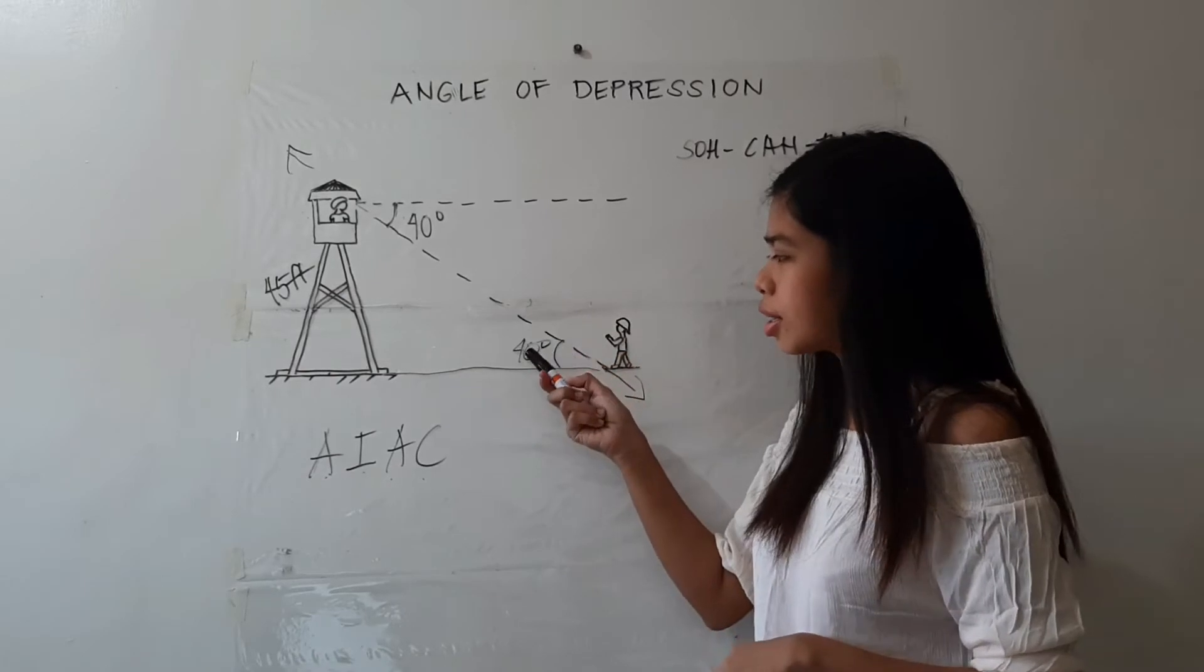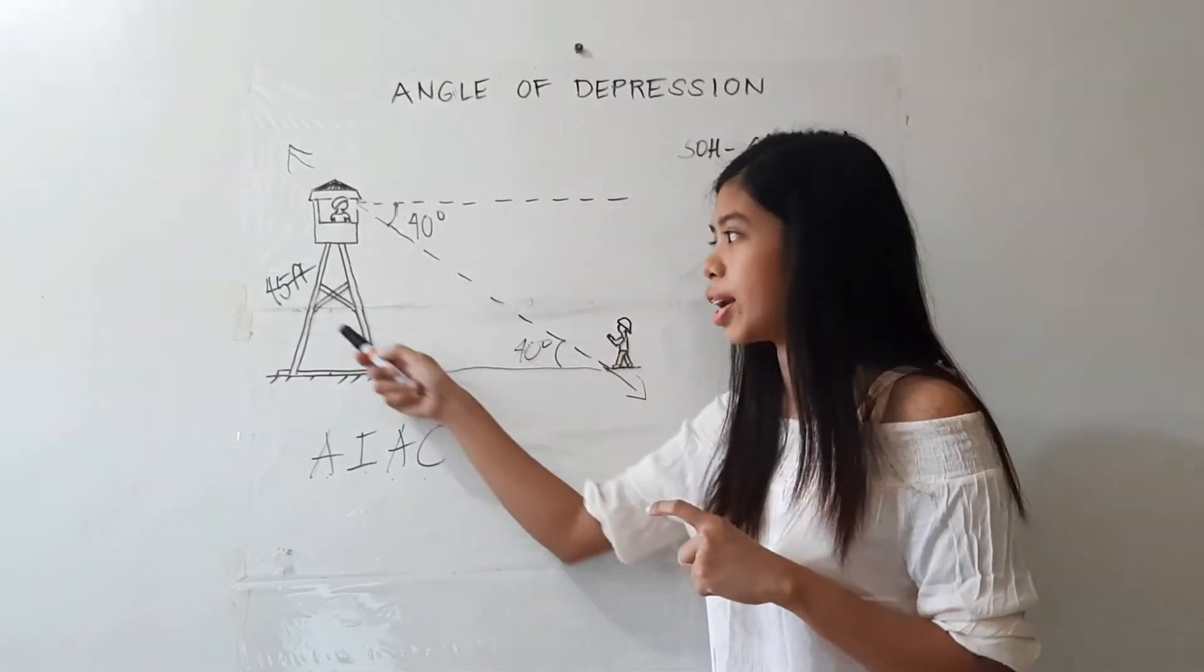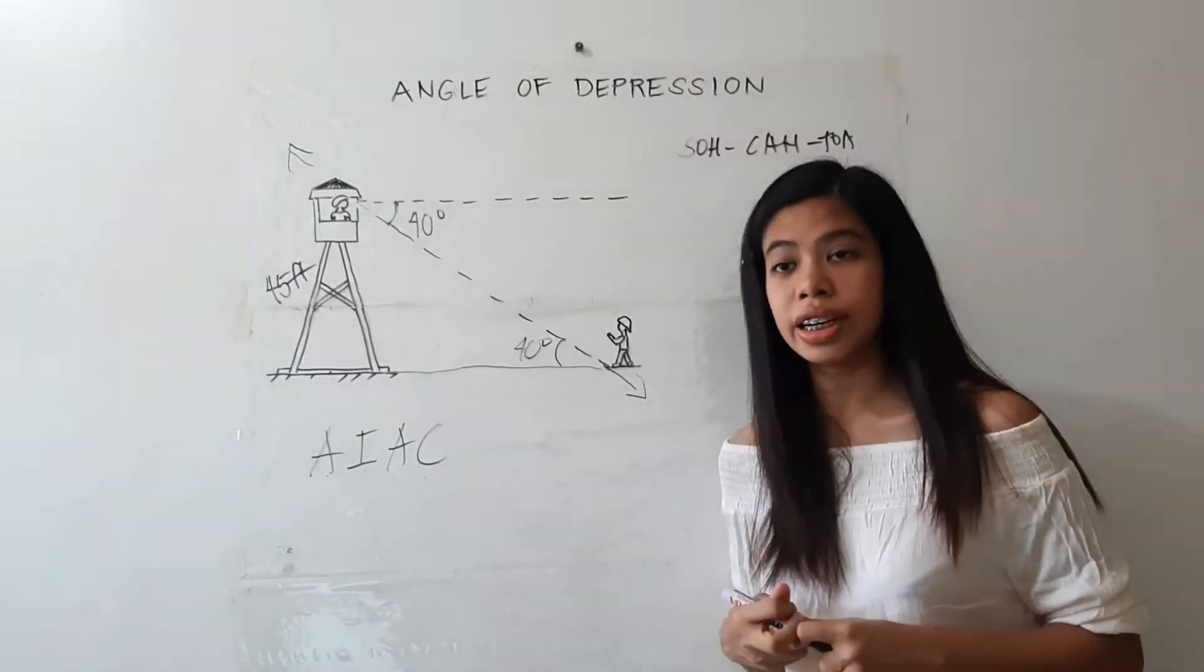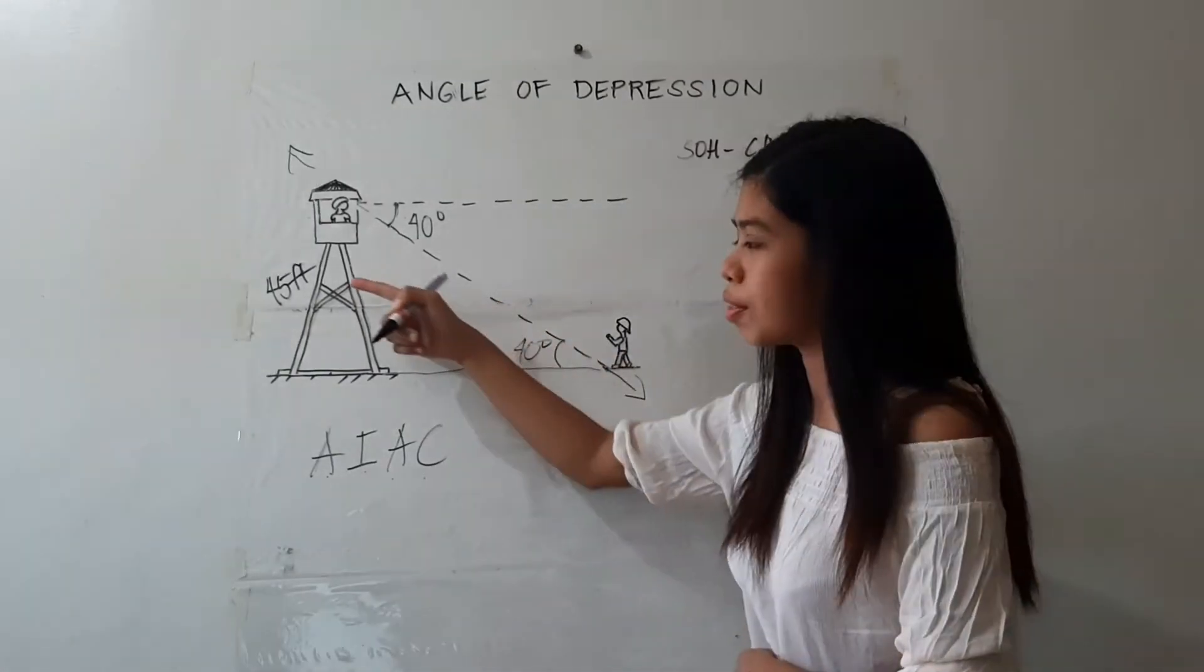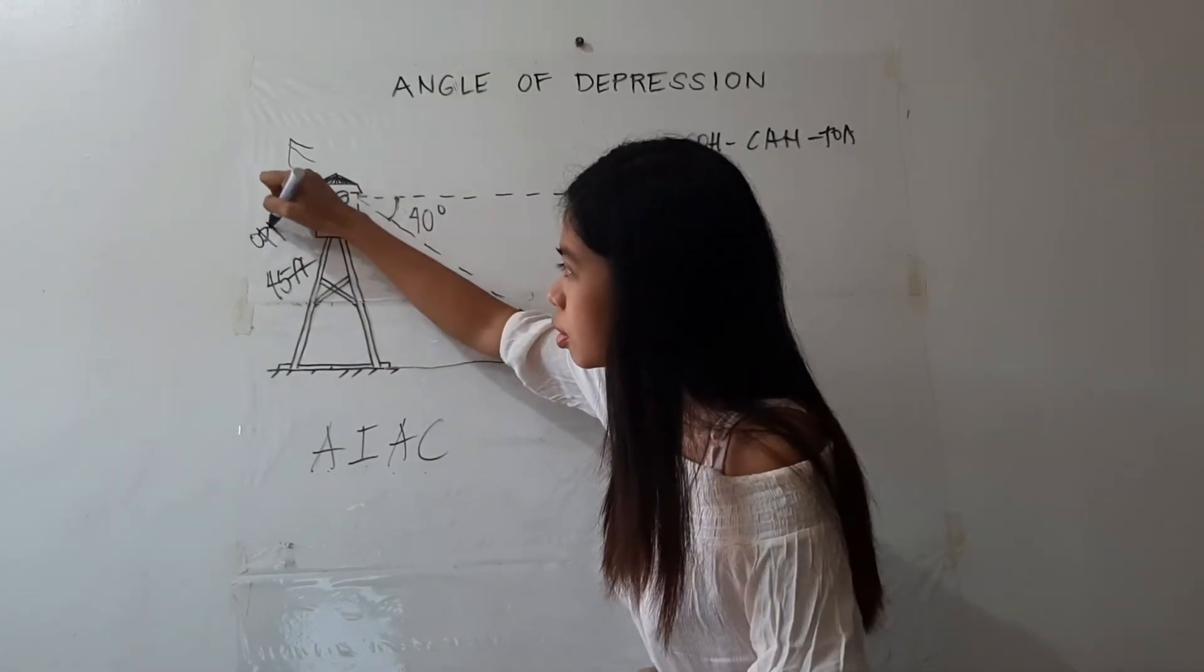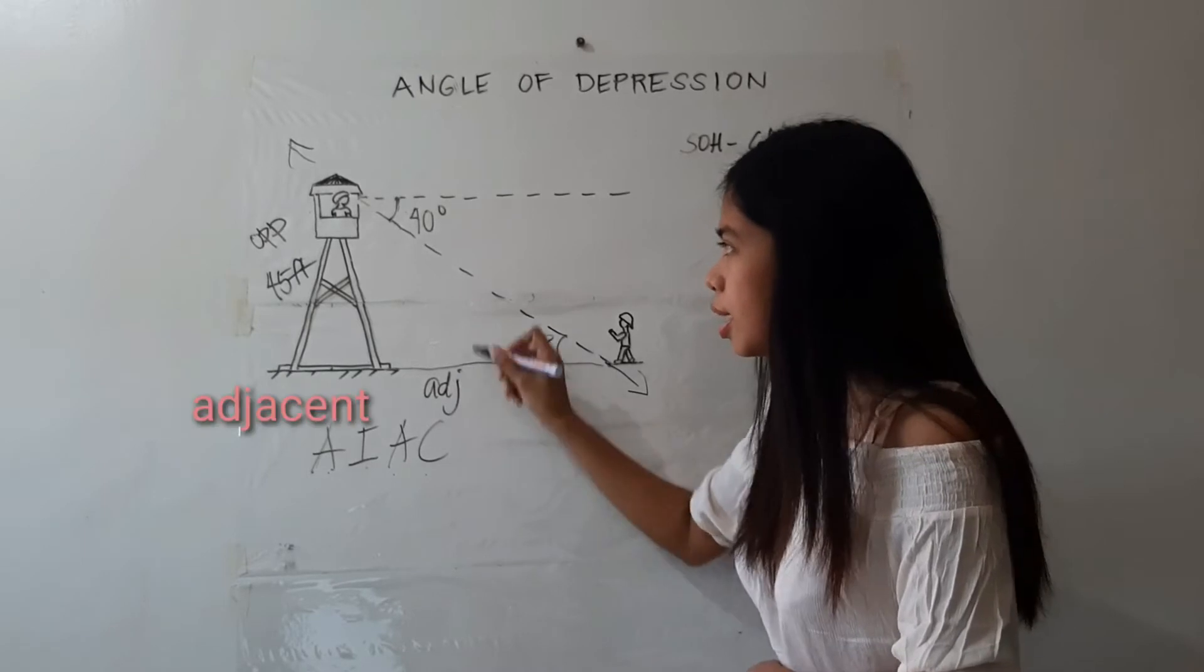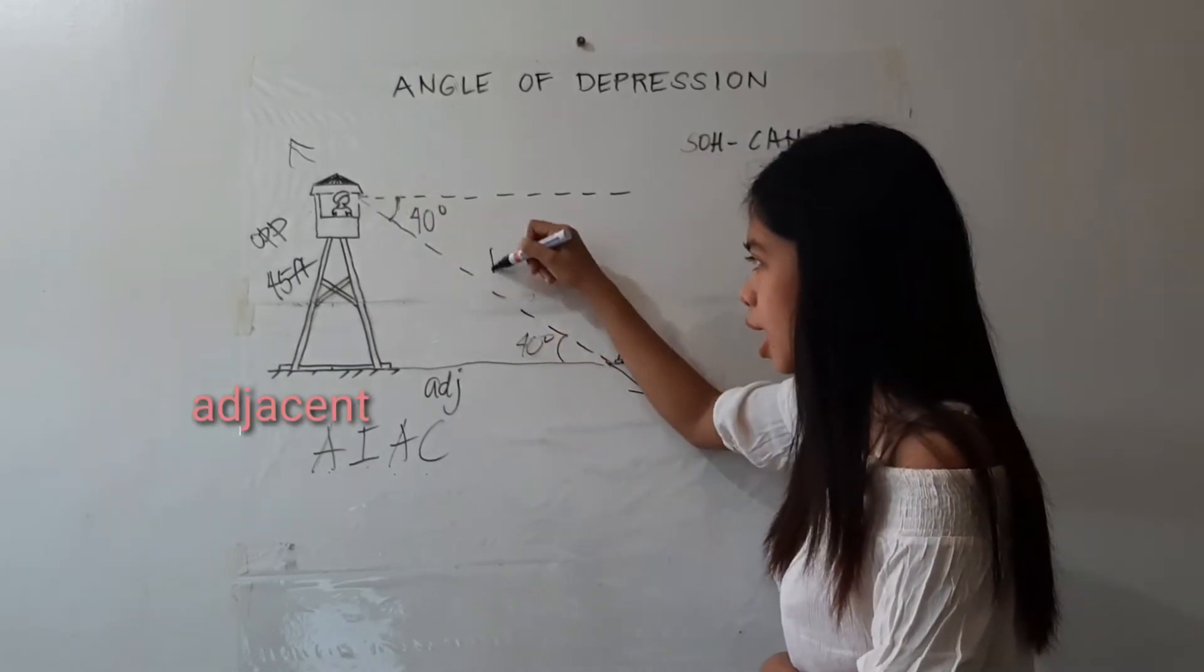So the part which is given, which is the height of the tower, would be the opposite side. This side, once again, is the adjacent side. And this line of sight is the hypotenuse.